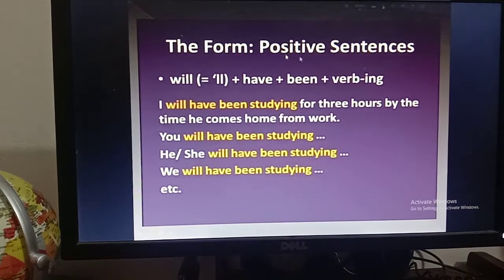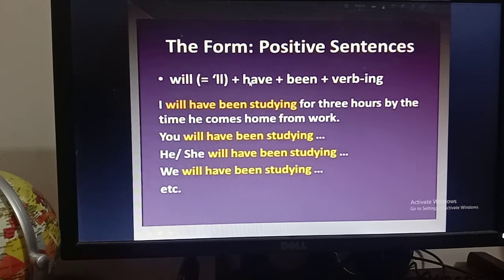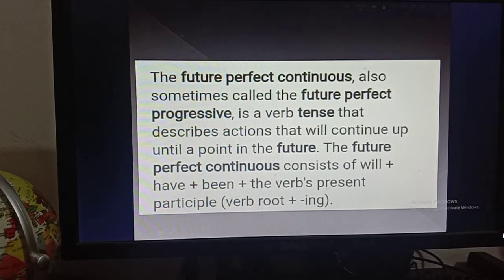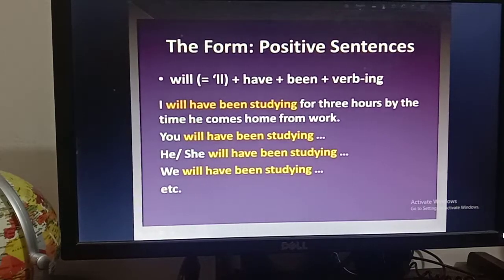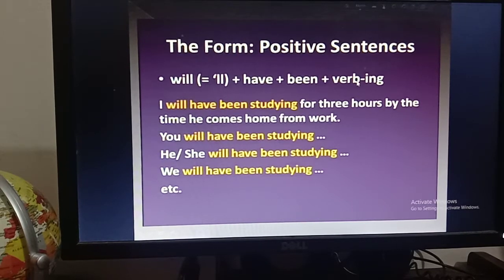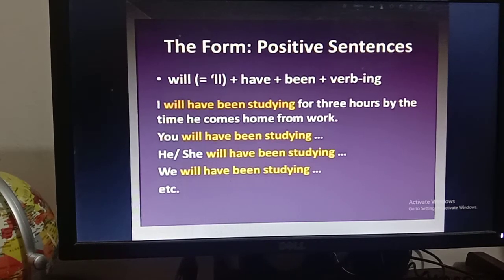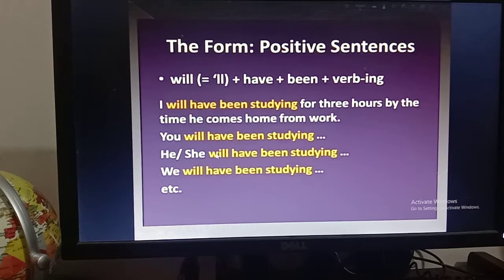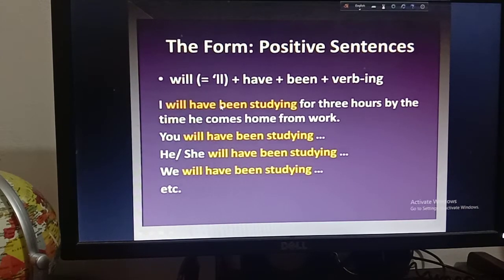For a positive sentence, you always bring: will, then have, then been, then verb + ing. You can see it was written as the verb's present participle form, which is also called verb + ing. You just need to remember: will + have + been + verb + ing. You don't need to learn the term 'present participle form' — simply learn will + have + been + verb + ing.